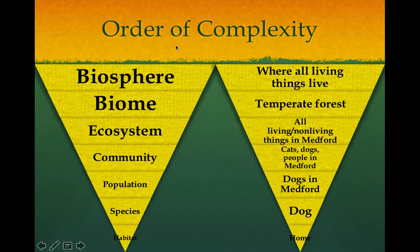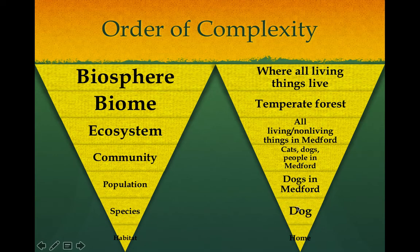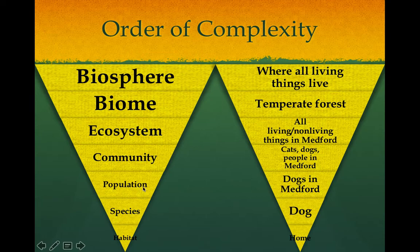The next part is to talk about the different levels of complexity that exist in the world. At the bottom, we have the smallest level, which would be a species — one member of a species, like one chipmunk in a forest. When you take all the members of a species and put them together, they make a population. So if we have one chipmunk, then we'd have a whole population of chipmunks. Then if we add all the different species — a lot more biodiversity now — you have something called the community. A community doesn't just include the chipmunks; it would also include the oak trees, rabbits, birds, and anything else that's alive in the area.